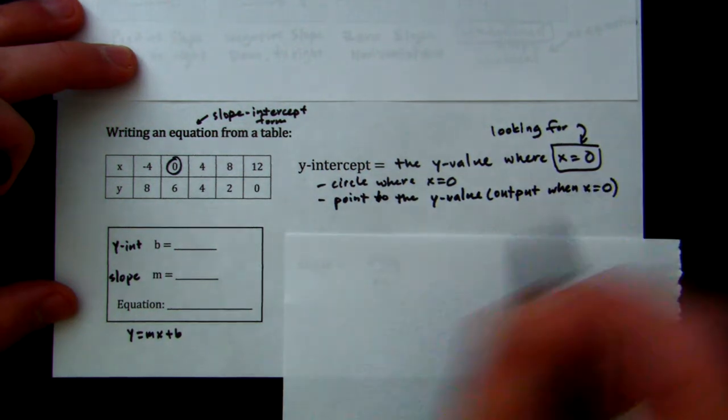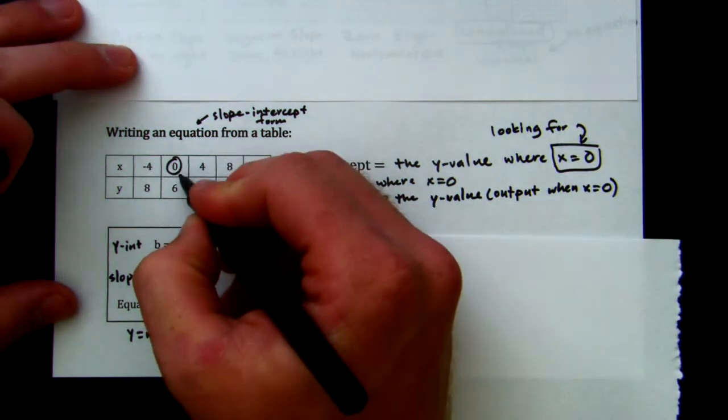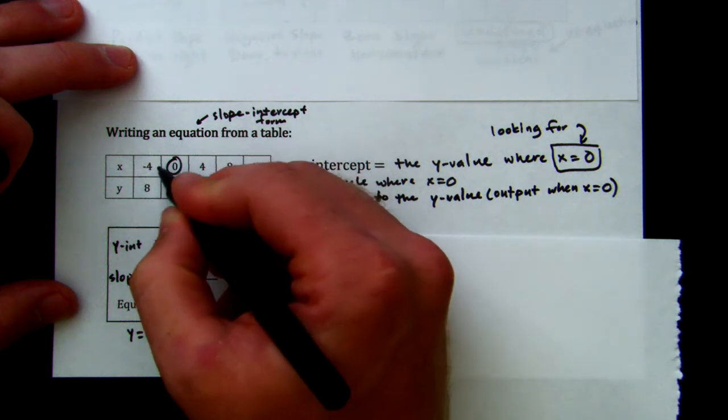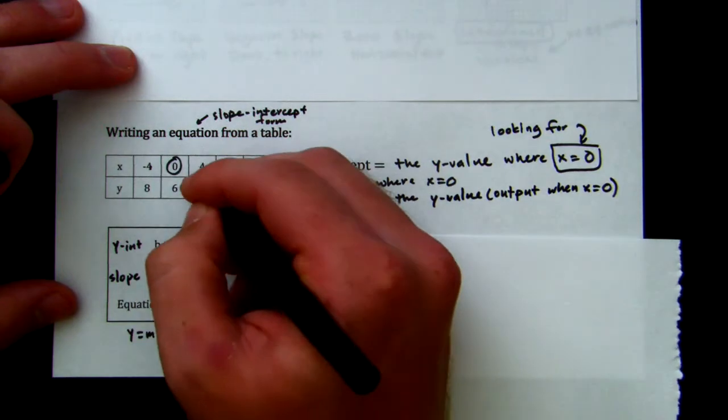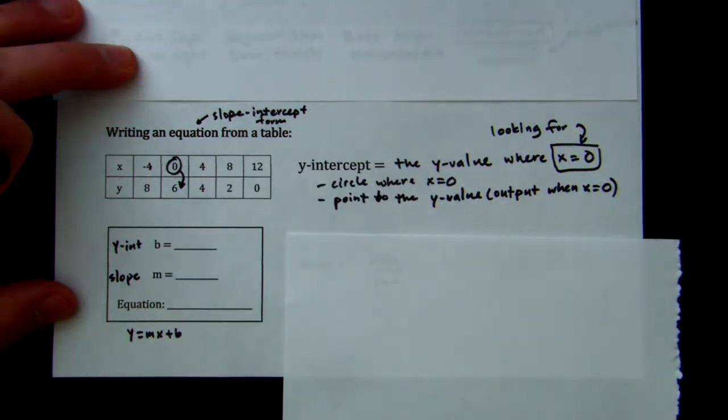If I plug in negative 4 to whatever this equation is, I'm going to get 8. If I plug in 0, I'm going to get 6. So I like to draw an arrow to that 6.